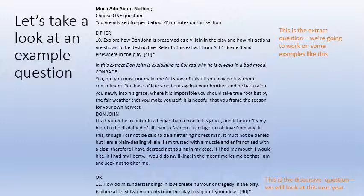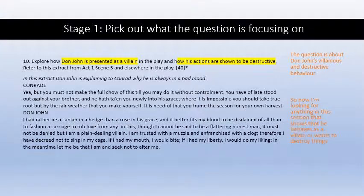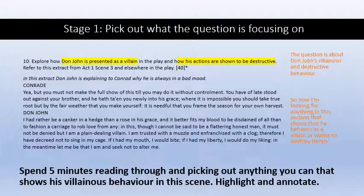The other option is the discursive essay question: 'How do misunderstandings and love create humour or tragedy in the play?' — bring at least two moments from the play to support your idea. Now, the first thing you need to do is pick out the command words in the question. For the extract question, the command words are: Don John is presented as a villain, and how his actions are shown to be destructive. So the question is about Don John's villainous and destructive behaviour.